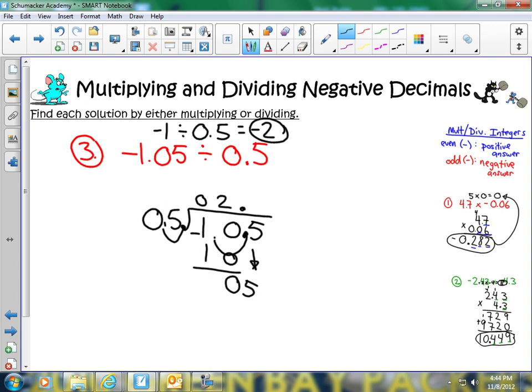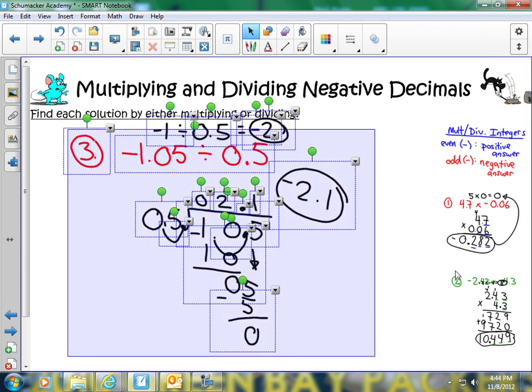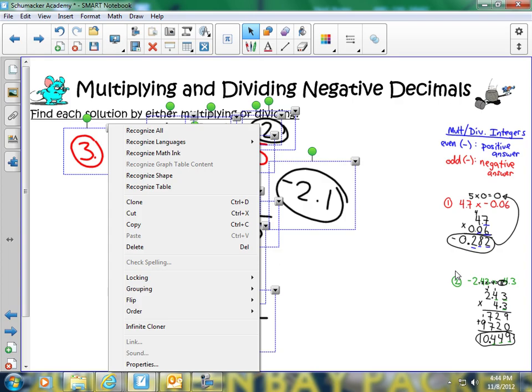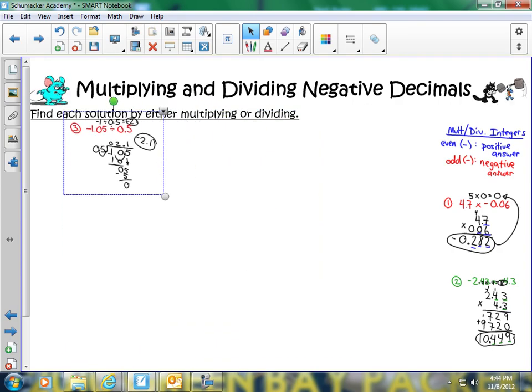5 goes into 5 one time. I multiply, I get 5. And I have 0 left over. So, my answer is 2.1. And since it's negative here, it must be negative here. And, hey, look, the answers are really close to each other. We've made a very good estimate, and our answer looks spot on. Nice job on that one.